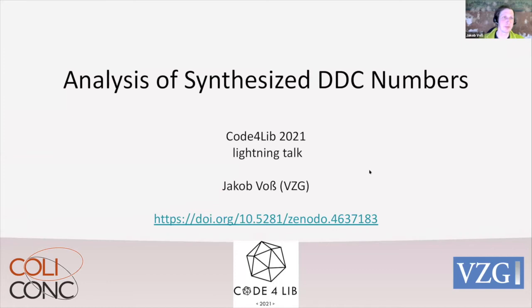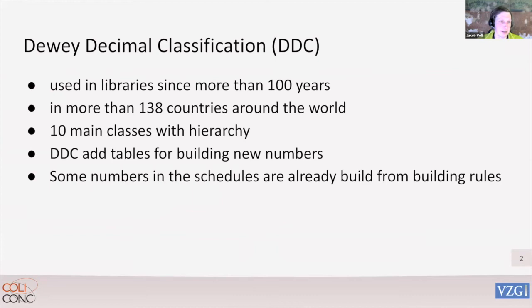Our next speaker is Jacob Voss with the decomposition of DDC synthesized numbers. I'd like to share some results of a project of a colleague of mine — she's been working on DDC numbers for many years. You all know DDC — it's used in more than 138 countries. It's a hierarchy with 10 main classes and there are DDC add tables to build new numbers. It's a faceted classification. Some of the built numbers are already in the schedules to look up, but others have to be built with knowledge of the DDC.